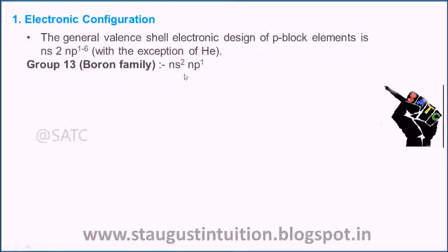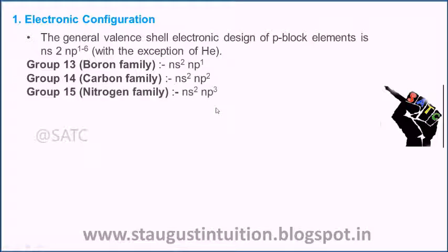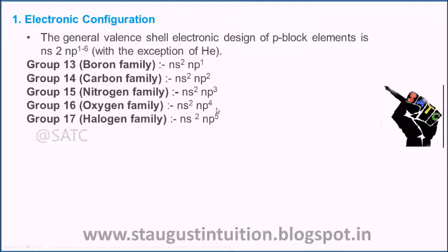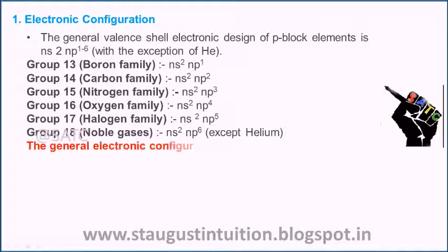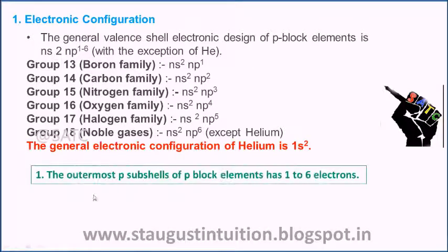Group 13 is the Boron family, with configuration np1. Group 14 is the Carbon family, np2. Group 15 is the Nitrogen family, np3. Group 16 is the Oxygen family. Group 17 is the Halogen family. Group 18 contains the Noble gases, except Helium. So the outermost P subshell of P-Block Elements has 1 to 6 electrons.